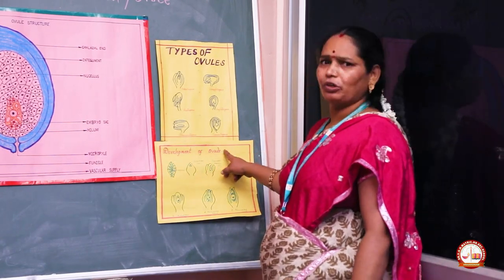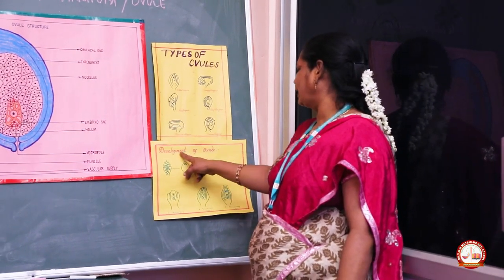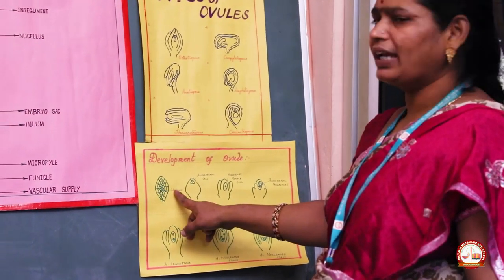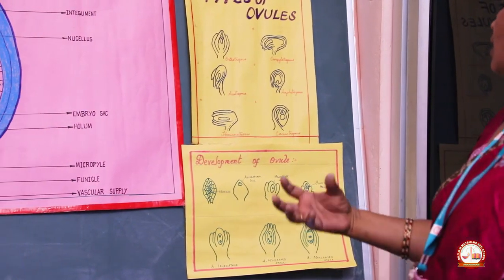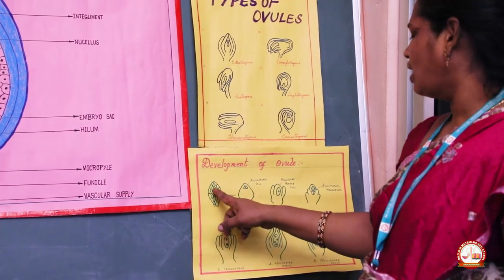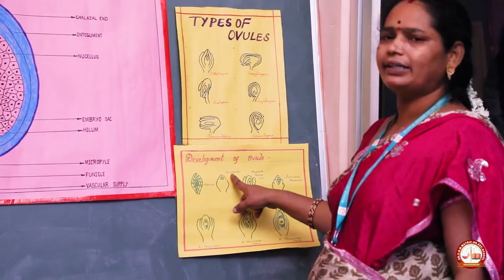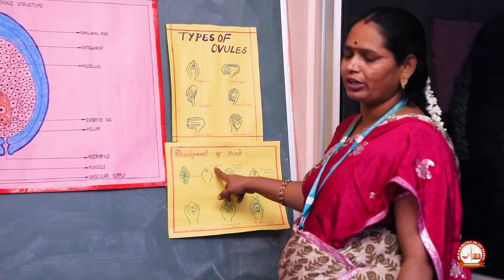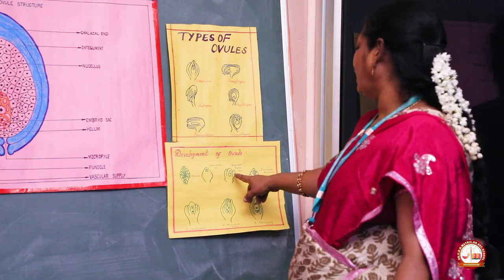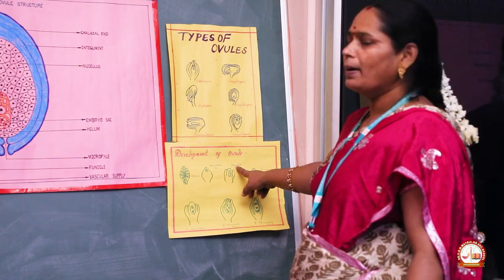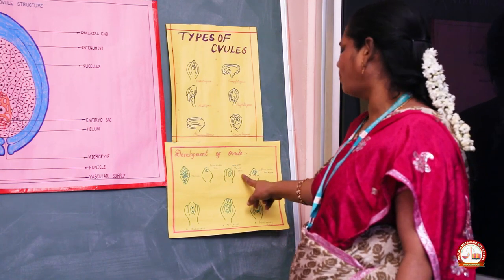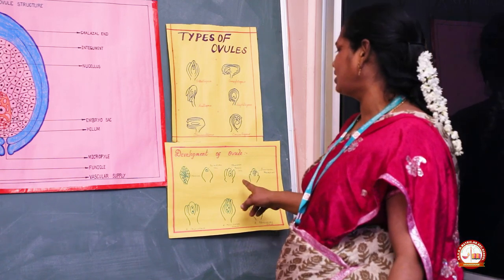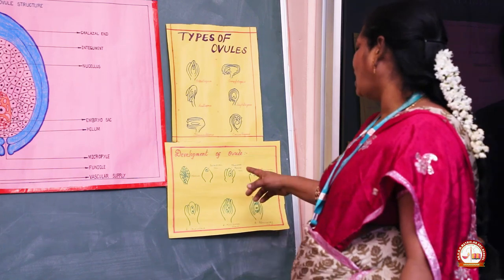Now we will see the development of the ovule in angiosperms. The development is quite crucial. In the centre, you have nutritive cells which provide nourishment to the growing cell. One of the cells in the archesporium acts as the archesporial cell, below the epidermis. This archesporial cell undergoes mitotic division and gives rise to the megaspore mother cell. The megaspore mother cell gives rise to megaspores — this process is also called megasporogenesis. Megasporogenesis means the formation of the megaspore from the megaspore mother cell.